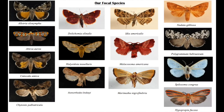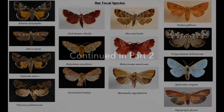All of these focal species are easily recognizable and abundant at all of our collection sites, which allows us to get accurate species counts and emergence data. It's important that a species can be found at all three sites — if a moth species is absent from one or more of the sites, we cannot compare the emergence times between all of the sites.